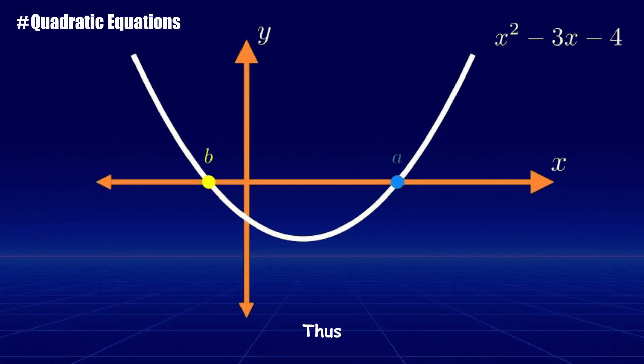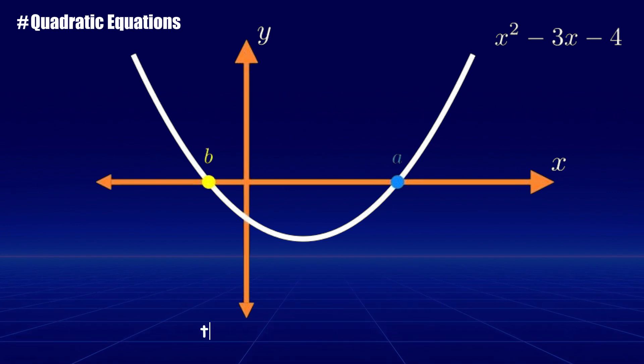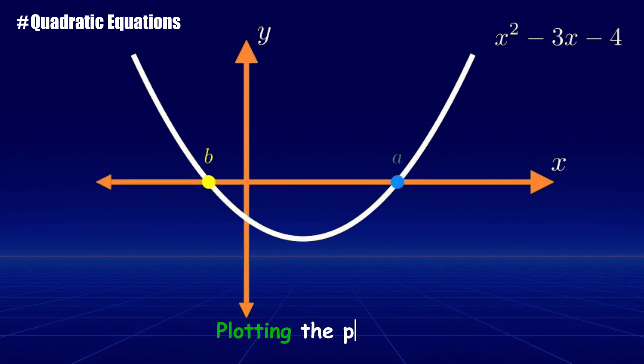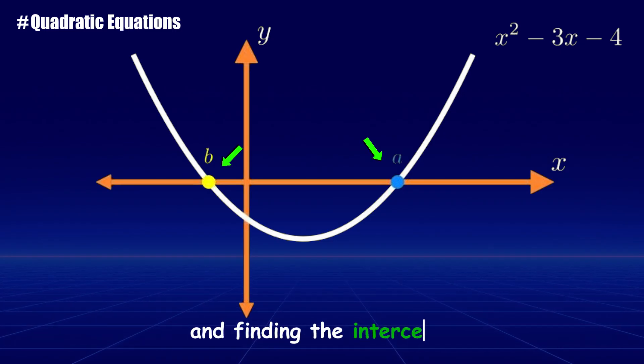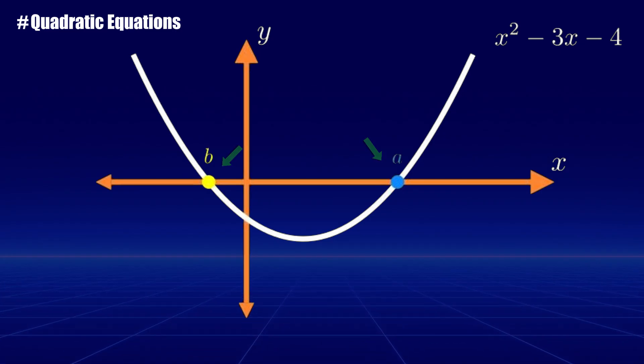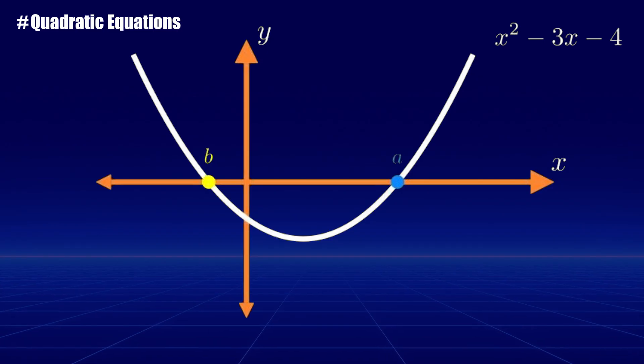Thus, the first method we can use to solve a quadratic equation is plotting the parabola and finding the intercepts with the x-axis. Now, this might be somewhat complicated as you don't want to plot the equation every time.